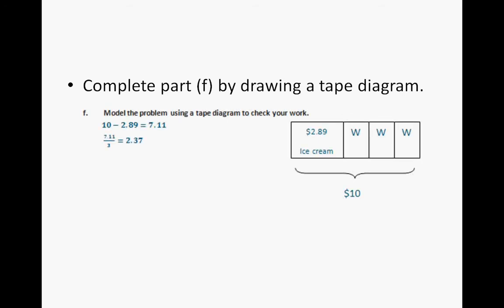All right, complete part F by drawing a tape diagram. Okay, you should have the tape diagram drawn, and it should look something like this. You have $2.89 for the ice cream and then 3 water bottles, which you don't know the price of yet. And that all totals up to $10.